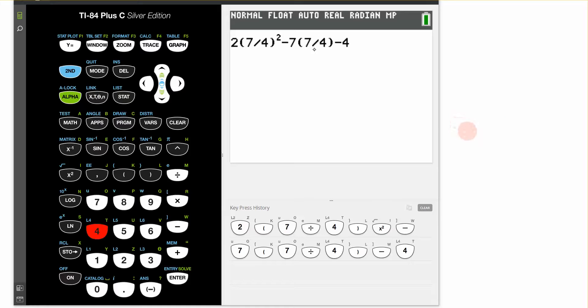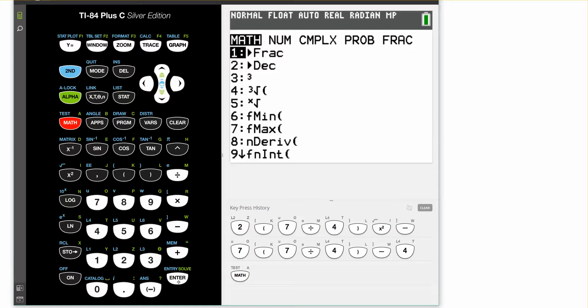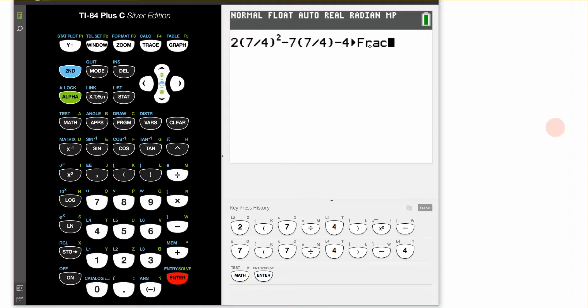All I need to do is have the calculator evaluate it for me. I go to math, the first button is fraction, hit enter. This tells the calculator to give me back an answer in fraction form. I hit enter again and you can see that the result is negative 81 eighths. That command gave me the reduced fraction, which is the exact value that I wanted.